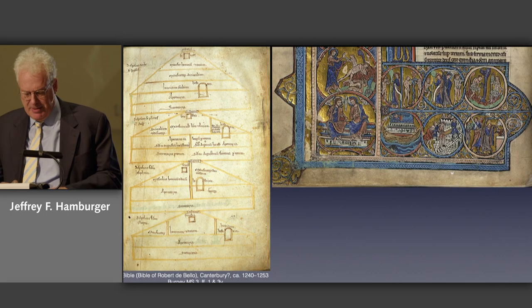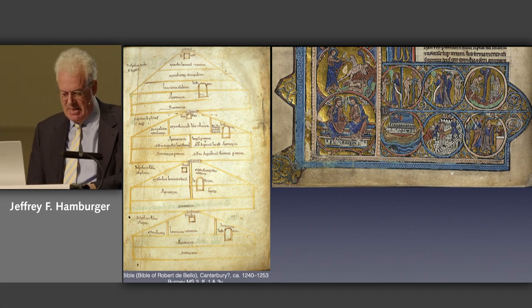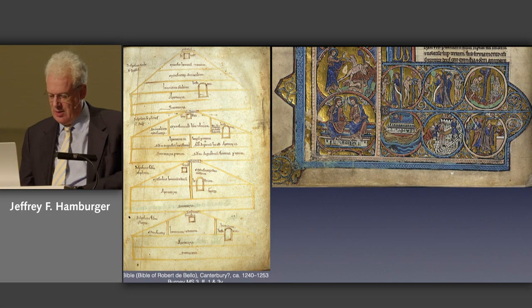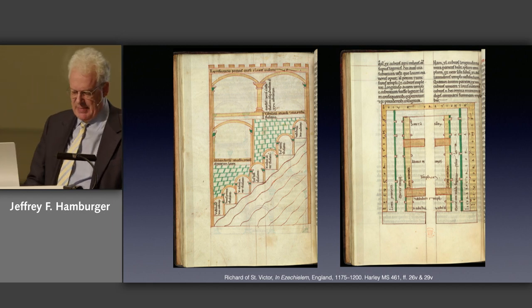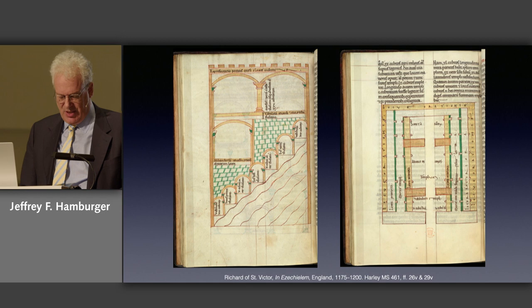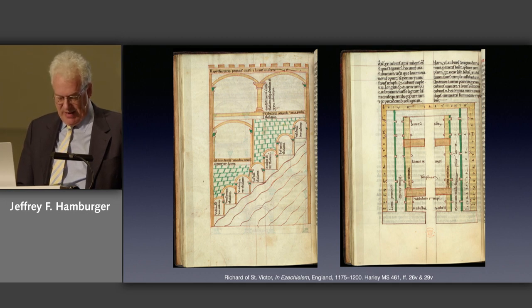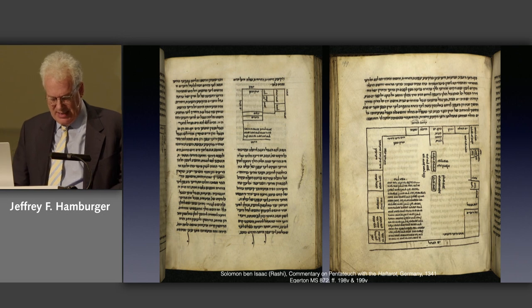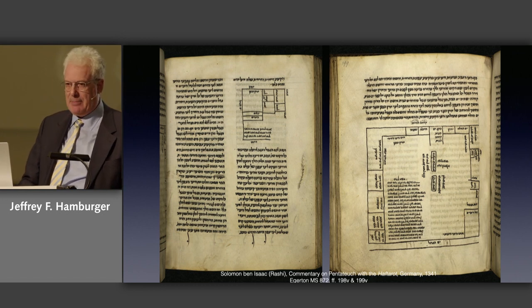In the Psalter, the diagrams complement the depiction of the Ark in the Bible's elaborate initial for Genesis. In their relative simplicity and application of a critical comparative method, such diagrams stand at a considerable remove from the exegetical edifices fashioned by Hugh of St. Victor only a century earlier. In similar fashion, in his commentary on Ezekiel — seen here in an English copy of the late 12th century — the Parisian theologian Richard of St. Victor sought to reconstruct not only the plan, but also the elevation of the temple in Jerusalem. Richard resorted to geometry, in this instance the ratios of the sides of a right triangle, to construe measurements not provided by Ezekiel's vision. Driven by his emphasis on the literal rather than the allegorical sense of the text, Richard drew in part on comparable diagrams in Rashi's commentary on the Pentateuch, seen here in a German copy dated 1341.